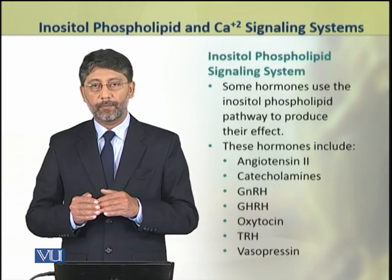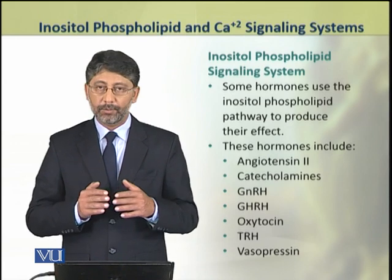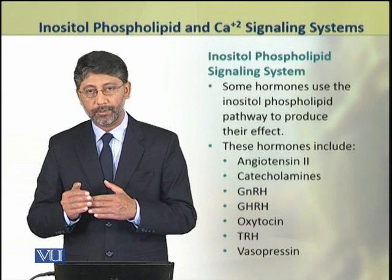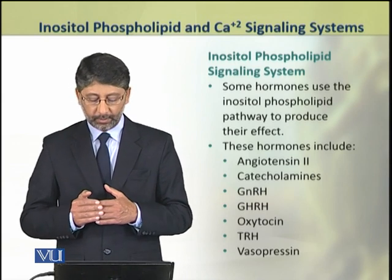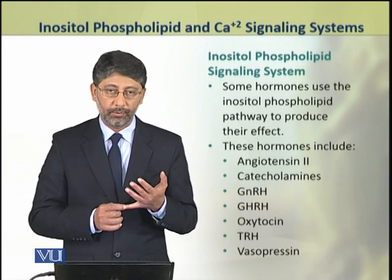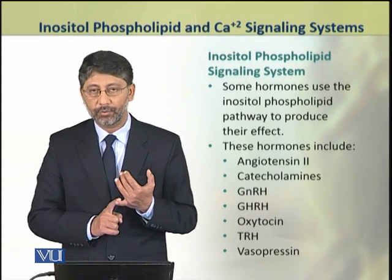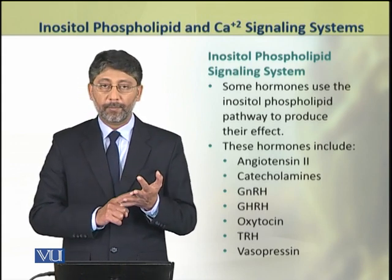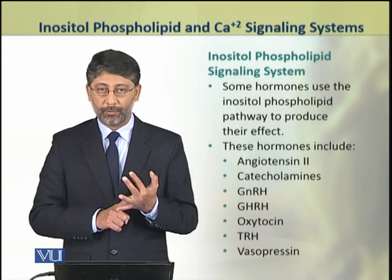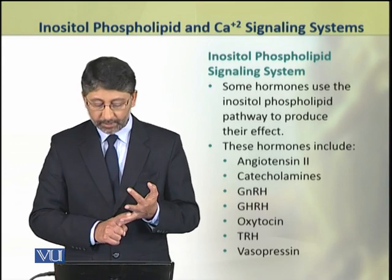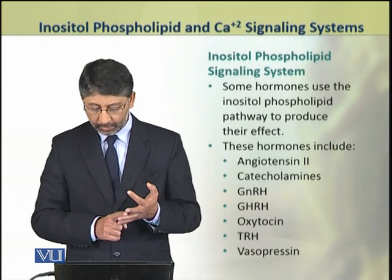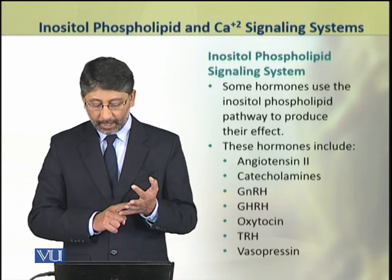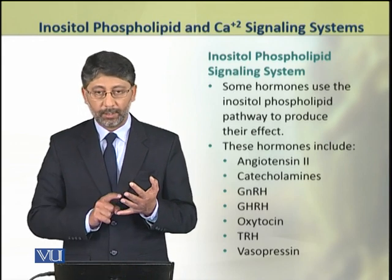Some water-soluble hormones use the inositol phospholipid pathway to produce their effect. These hormones include angiotensin-2, catecholamines, some hypothalamic hormones such as GnRH, growth hormone releasing hormone, oxytocin, thyrotropin releasing hormone, and vasopressin or ADH.